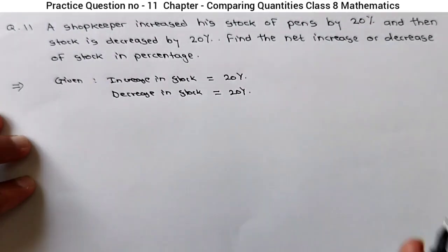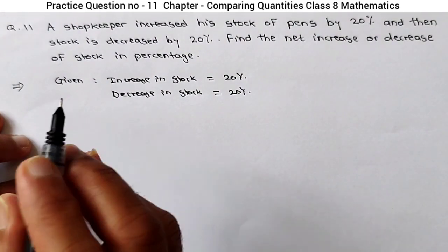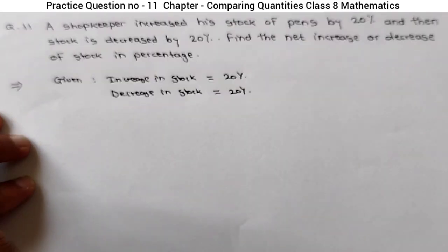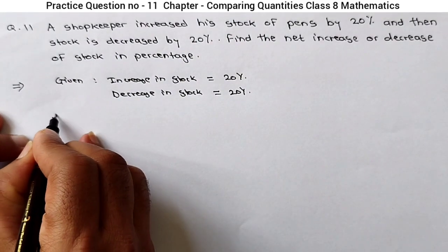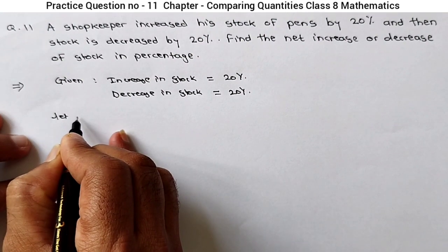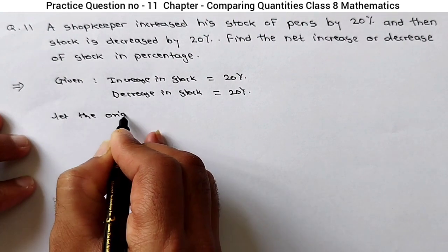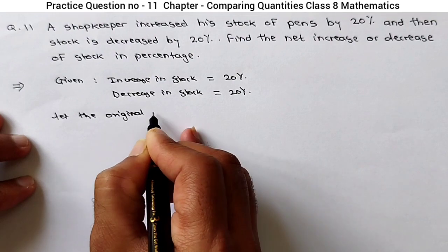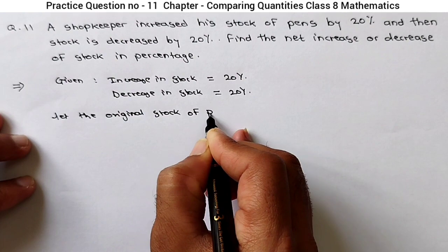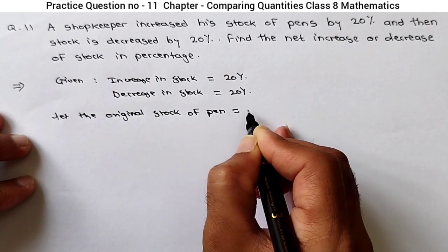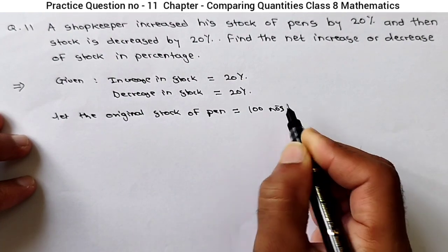So here we will make a statement. Let's assume the original stock. The original stock is not given, but we have to assume. So let the original stock of paint be equal to 100 numbers.